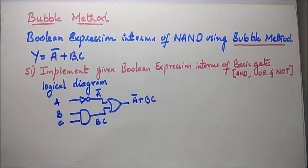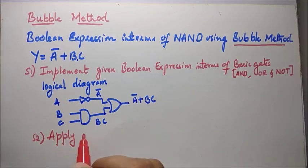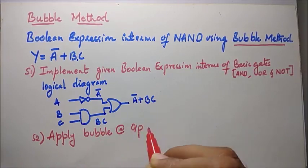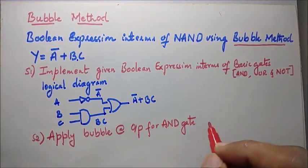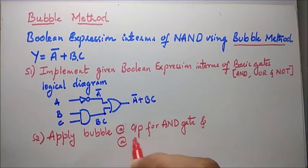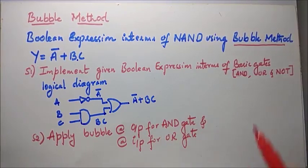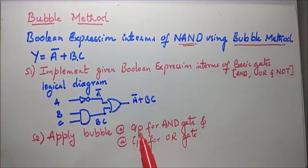Now step two says: apply bubble at the output for AND gate and at the input for OR gate. Since we are trying to implement the boolean expression using NAND gates, we apply bubble at the output of AND gate and at the input of OR gate. Remember this rule.